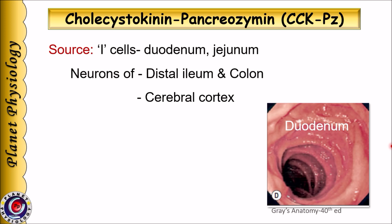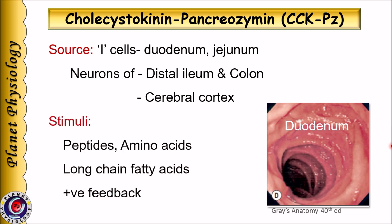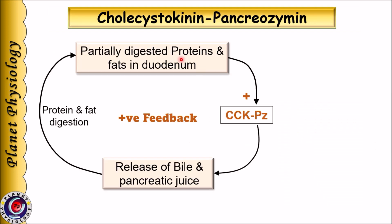The next hormone in the gastrin family is cholecystokinin-pancreosymin. Earlier it was called cholecystokinin due to its action on the gallbladder, but later it was discovered to possess an important role in the release of pancreatic enzymes, and hence the word pancreosymin was added. CCK-PZ is secreted by I cells in the duodenum and jejunum, and is also found in neurons of the distal ileum, colon, and cerebral cortex. The most important stimulus for its release is the presence of peptides and amino acids in the duodenum. It is also released in response to long-chain fatty acids with more than 10 carbon atoms. CCK secretion is regulated by positive feedback — partially digested end products of proteins and fat cause release of CCK, which stimulates release of pancreatic juice and bile, aiding in digestion and absorption.